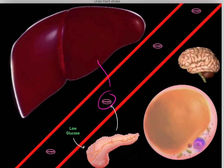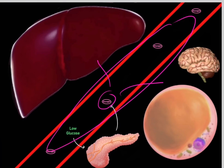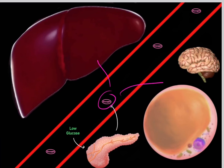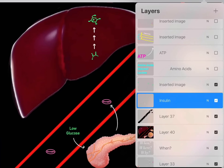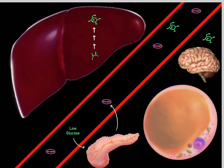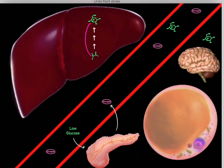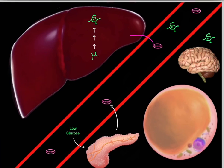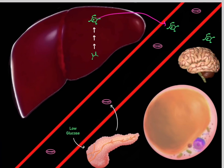When the pancreas senses low blood glucose, it releases glucagon. Glucagon signals the body that blood glucose is low and needs to be restored to keep the brain functioning. In response, glucagon tells the liver to biosynthesize new glucose molecules through a process called gluconeogenesis, and the liver then dumps glucose into the bloodstream.